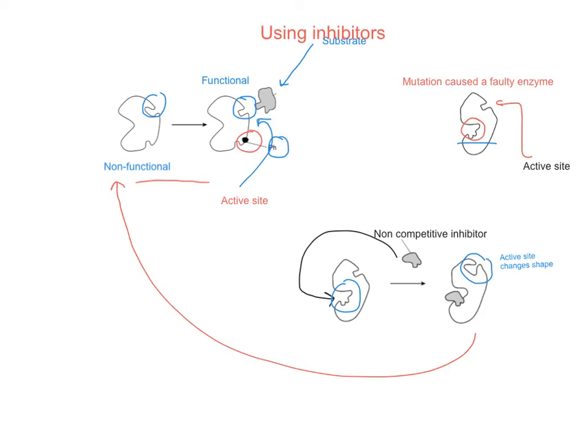Therefore, obviously, the cell has lost its control — it's not able to turn this enzyme on and off anymore. And therefore it's better for the patient, if they've got cancer, to just wipe out this enzyme totally and put it back into its non-functional form.